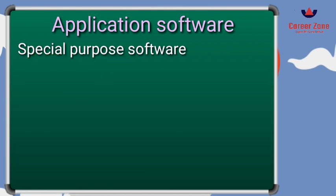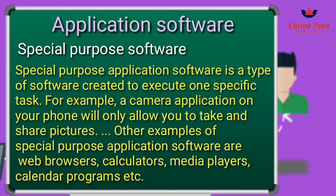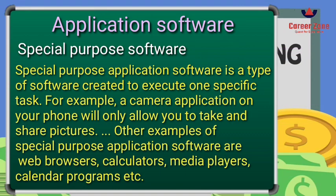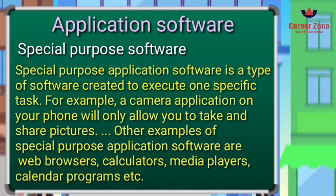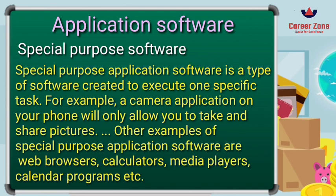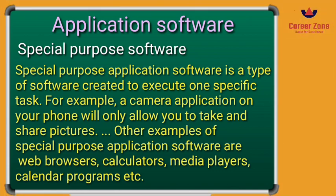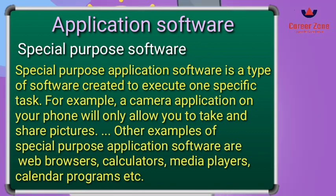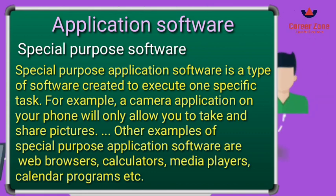The second type is special purpose software, which is specifically designed for a particular purpose. For example, the camera app on your phone can only click or share pictures. A calculator can only perform calculations — it cannot write a document or play music. A media player can only play music. Software designed for one specific purpose is categorized under special purpose application software.